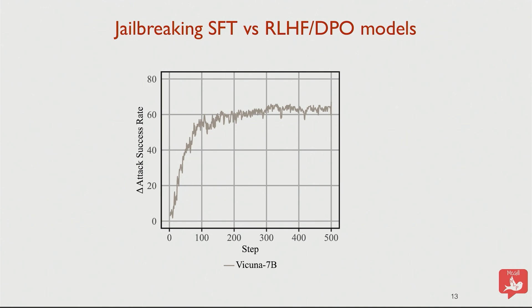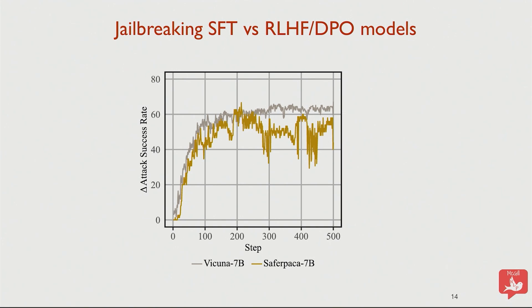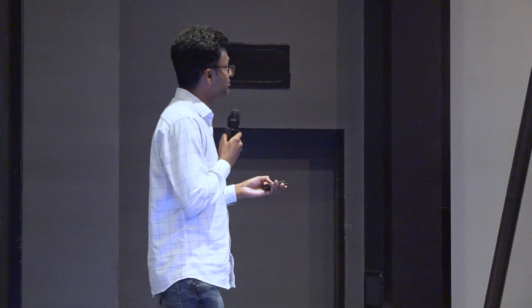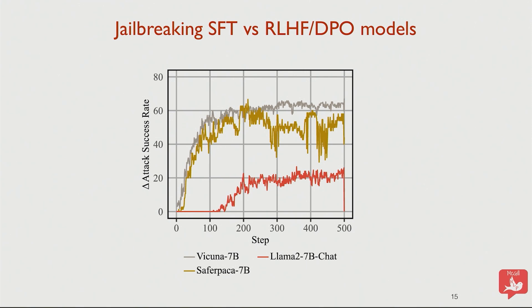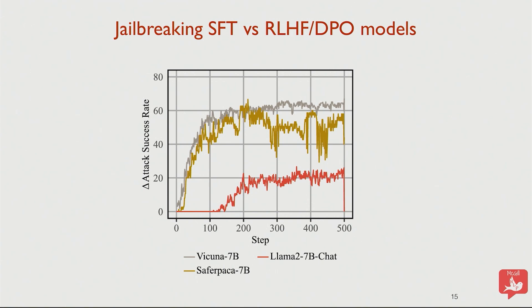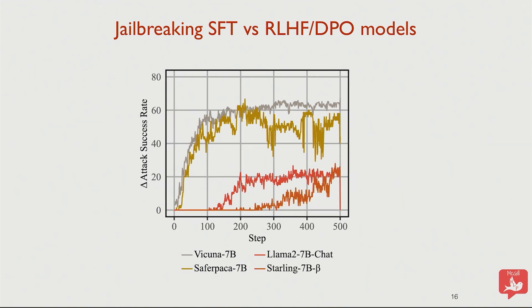You can actually find universal triggers for SFT models. For Vicuna, within just a few steps it would break, achieving an attack success rate of around 60%. The same applies to SaferAlpaca, which is instruction-tuned on data distilled from ChatGPT. But when it comes to models trained using RLHF or DPO — such as LLaMA-2-7B — we tried a lot to break it; it's one of the hardest models. Interestingly, LLaMA-3 is actually easier to break than LLaMA-2. The same story repeats for Starling-7B: even if you find a trigger, it doesn't work that well.